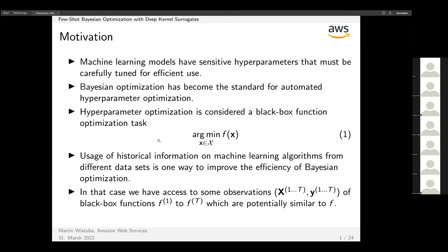As you all know, machine learning models have sensitive hyperparameters that must be carefully tuned. Bayesian optimization has become the standard for automated hyperparameter optimization. Hyperparameter optimization is considered a black-box function optimization task.